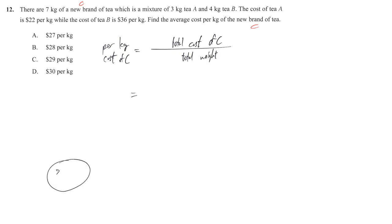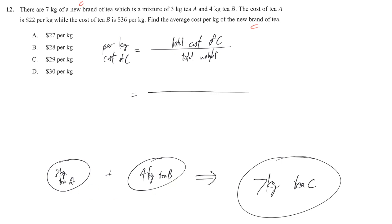The process is 3 kg tea A plus 4 kg tea B will become 7 kg tea C. So that gives you the idea of how to get the total cost. It obviously comes from the cost of A together with 4 kg cost of B. The total weight is 3 plus 4, which equals 7 kg.